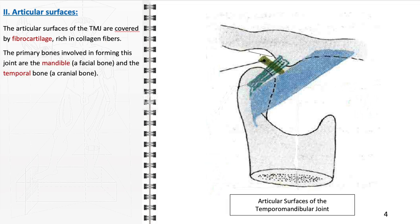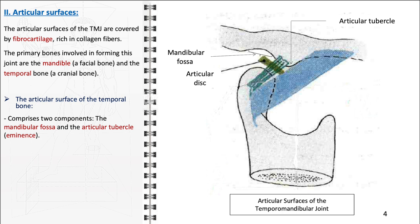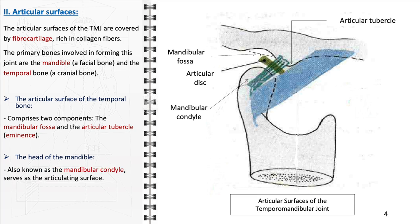Integral to the formation of the temporomandibular joint are two primary bones: the mandible, a prominent facial bone, and the temporal bone, a key component of the cranial skeleton. Together, these bones create the intricate structure of the temporomandibular joint, allowing for its versatile range of motions. The articular surface of the temporal bone consists of two essential components: the mandibular fossa, which provides a concave region for articulation with the head of the mandible, and the articular tubercle, also known as the eminence. At the core of the joint's articulation is the head of the mandible, recognized as the mandibular condyle, which serves as the primary articulating surface engaging with the mandibular fossa and articular tubercle during jaw movements.